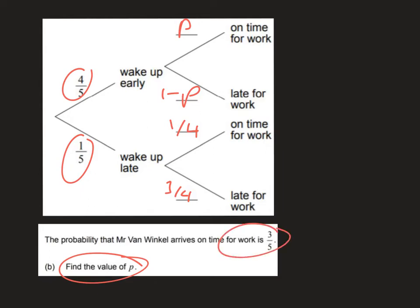Remember there are two ways that he can arrive on time for work. The first option is that he wakes up early and is on time for work. In order to work that out we have to multiply, so that's going to be four-fifths of P.